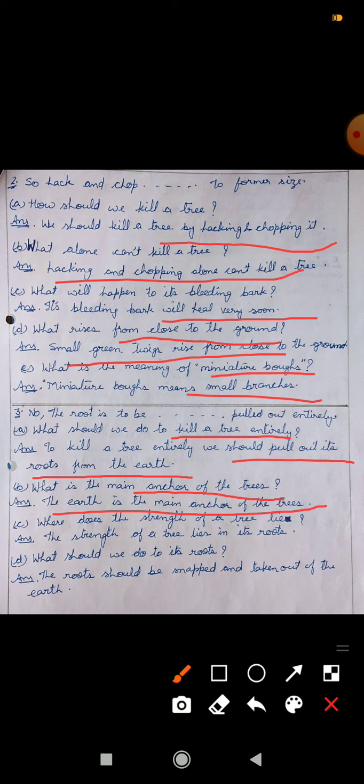Where does the strength of a tree lie? Kahan hai uski taakat peed ki? The strength of a tree lies in its roots. Uski jadon mein hai. What should we do to its roots? The roots should be snapped and taken out of the earth. Means, unko kaat dena chahe ye roots ko aur earth se baahar kheech ke nikaal dena chahe ye. So, next para, next extract is fourth.